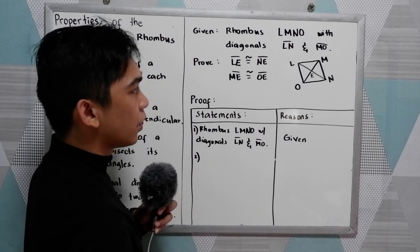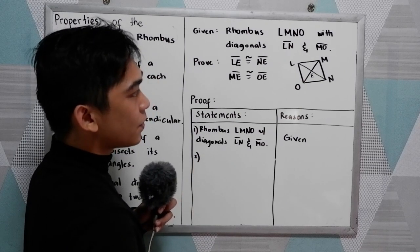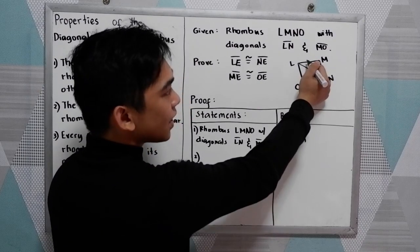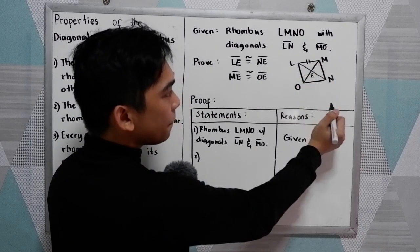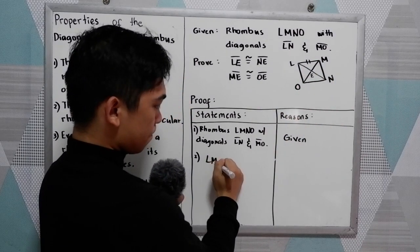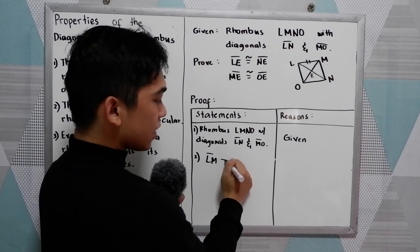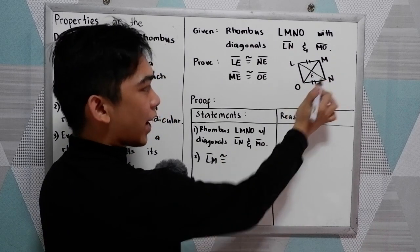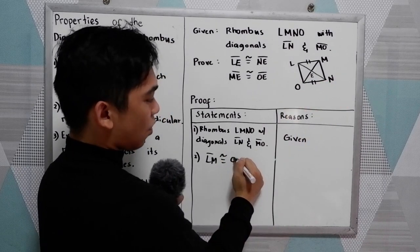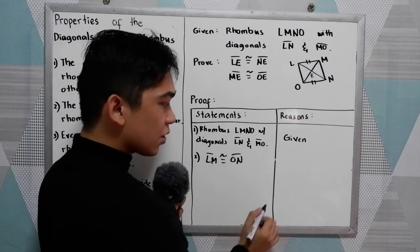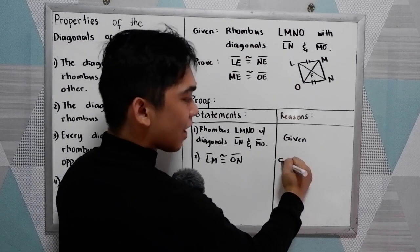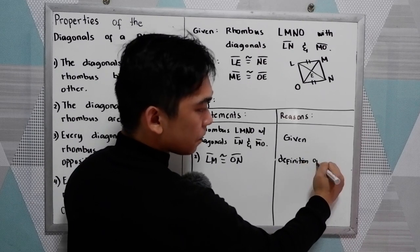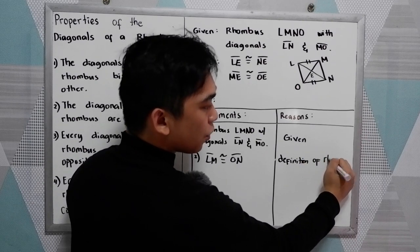Second, we know that by the definition of a rhombus, LM is congruent to OM. The reason is: definition of rhombus.